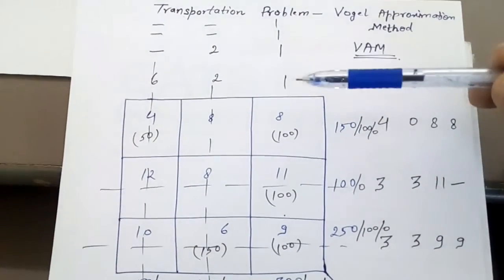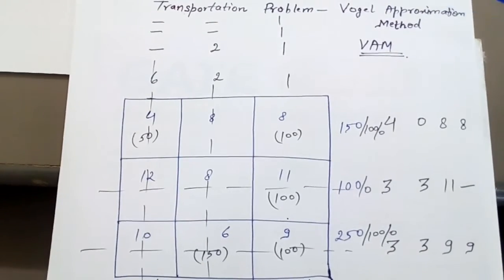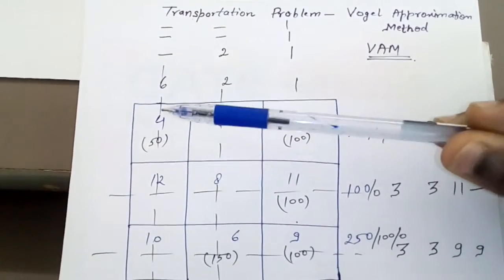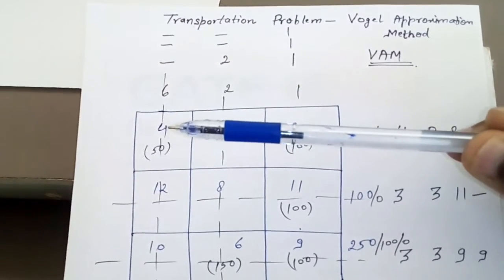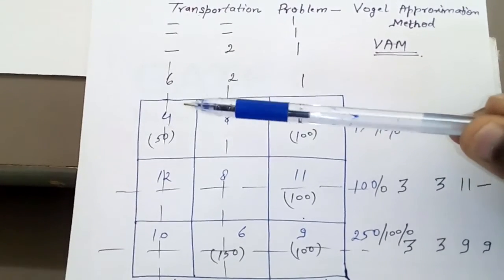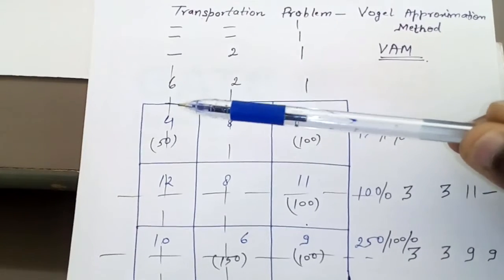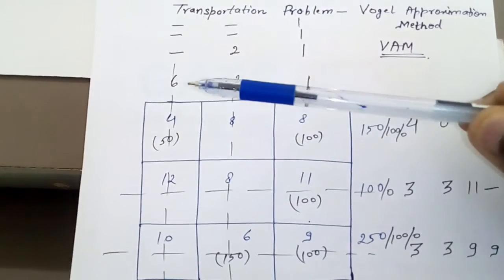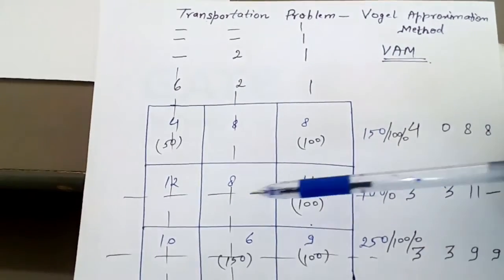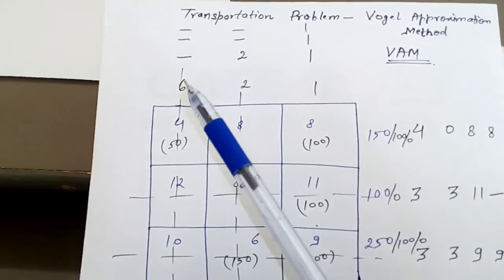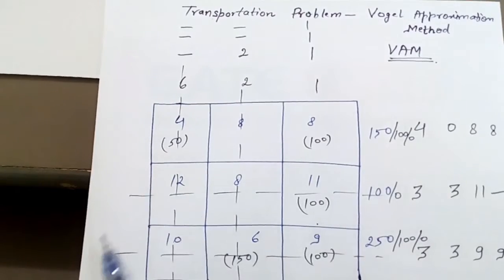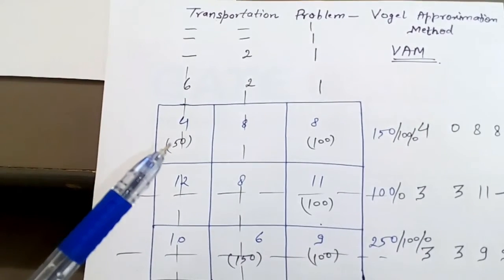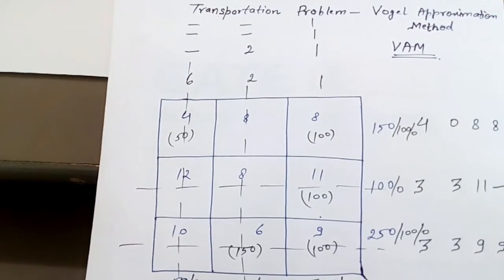The maximum penalty is 6, which occurs in the first column. Corresponding to this column, allocate to the minimum cost element, which is 4. The supply here is 50 and the demand is 150, so a maximum of 50 can be supplied. Write 50 here, supply becomes zero, and cross out this row. The remaining demand in this column drops from 150 to 100. The remaining elements are 8, 8, 8, 11, 6, 9.